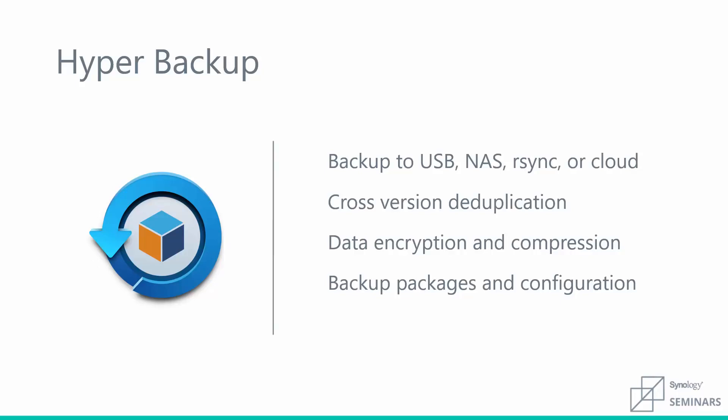Hyper Backup is a much more traditional piece of backup software. It's highly configurable — whether you're backing up to a USB device, another NAS, a server that supports RSync, or a cloud account. Many customers are integrating with cloud accounts, and all of these are options as your backup target. This is a more traditional backup, so it's something you'll need to restore should you need to access it. That comes with advantages: you can use cross-version deduplication and compression to save on size, encrypt your backups to protect that data, and back up the packages and configuration of your Synology NAS. The key distinction: with snapshot replication you have an exact, instantly accessible copy; with Hyper Backup you have a highly configurable traditional backup with many destination options.